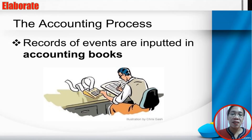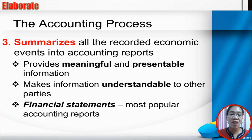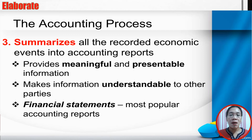The third major step of accounting is summarizing. You have to summarize all the recorded economic events into accounting reports. This provides meaningful and presentable information and makes information understandable to other parties. The summarized report is a financial statement — the most popular accounting report — used when presenting to other parties, especially when you are looking for financing.